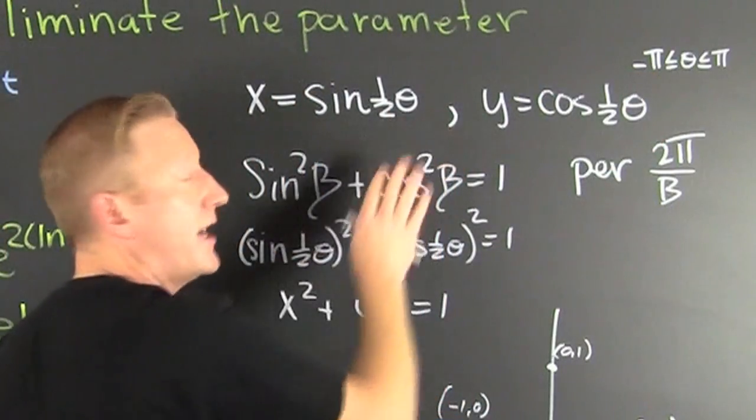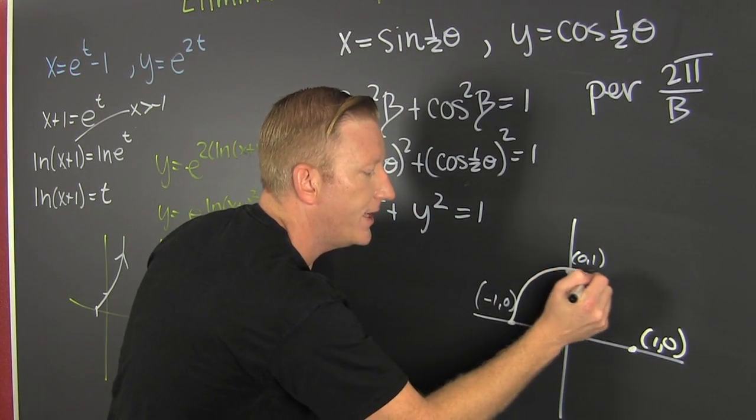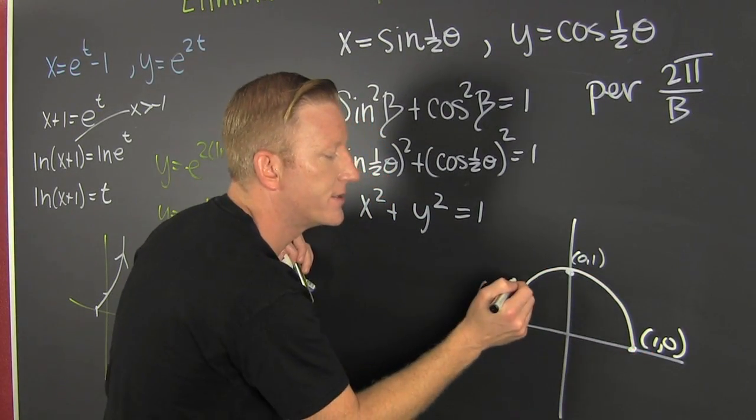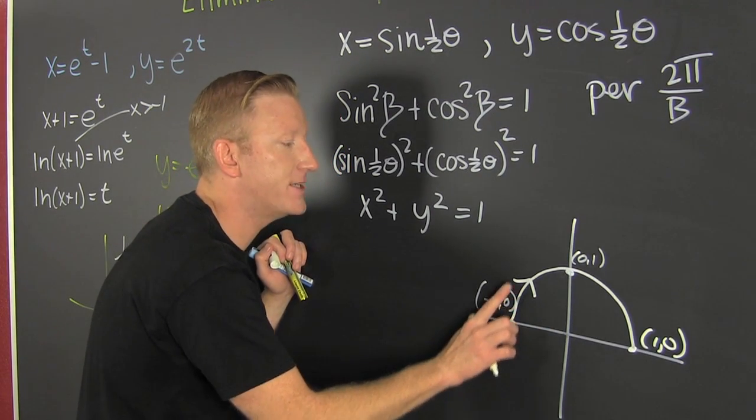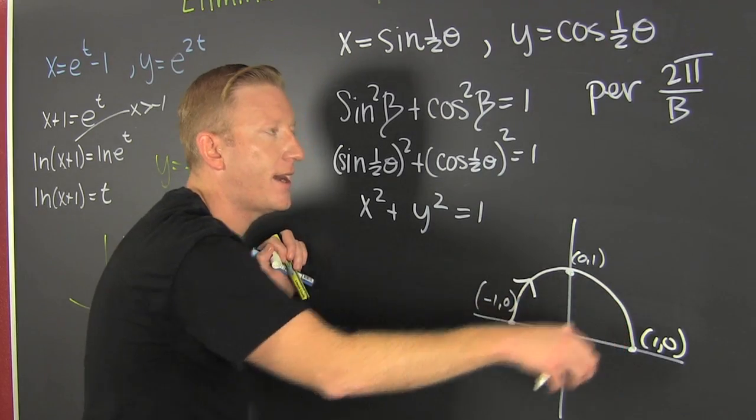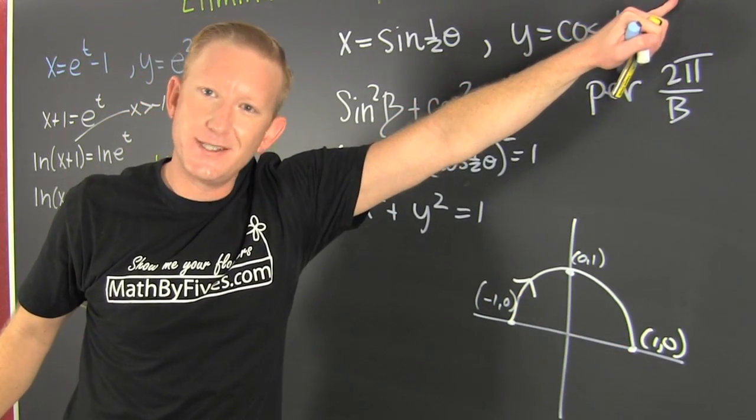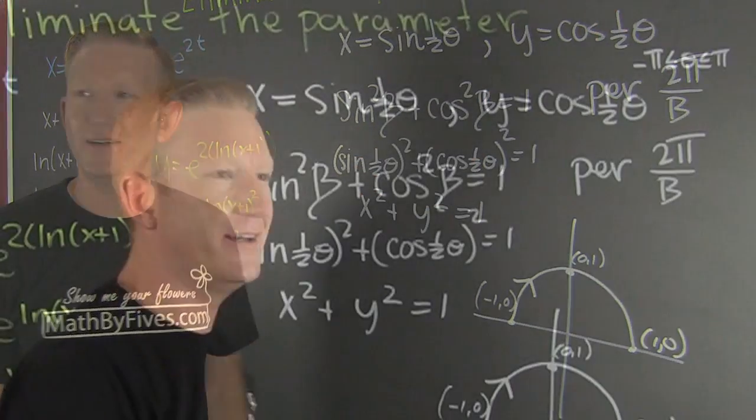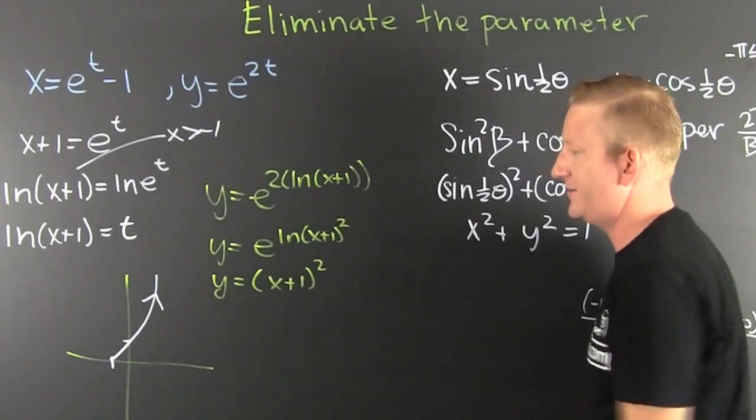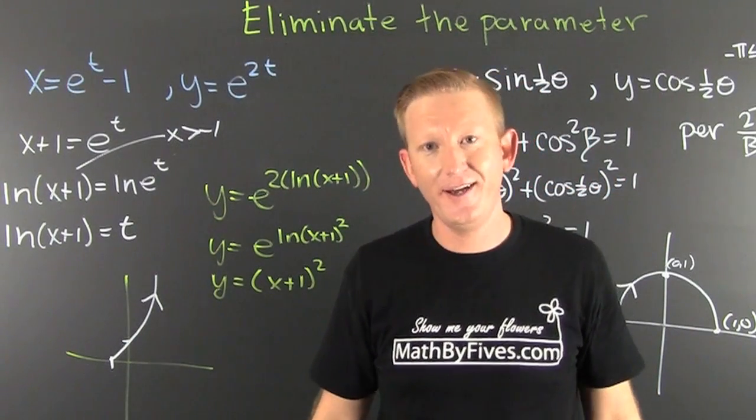And when we grab this guy with those restrictions, we're going to get a hero in a half shell, turtle power. And it is going that way because we're going from minus pi to pi. We're dealing with T's parameters. This parameter's theta. I'm done here and I'm on to the next one.